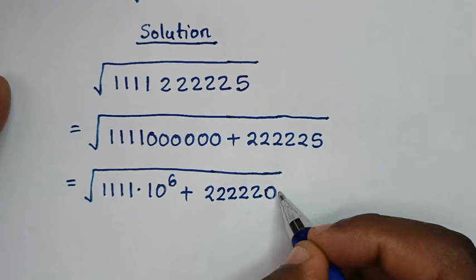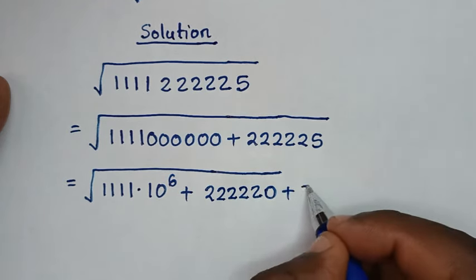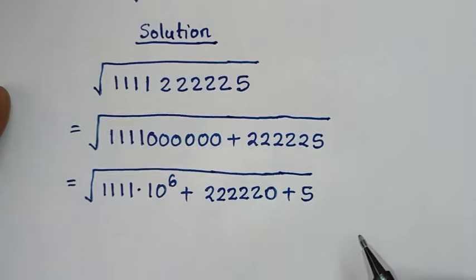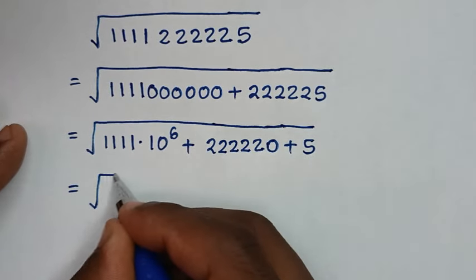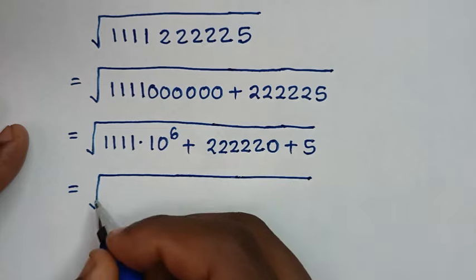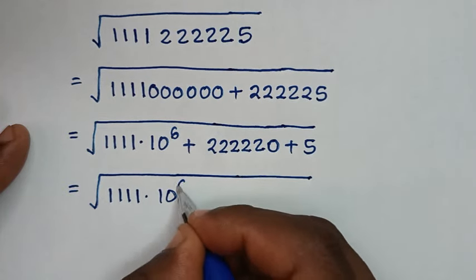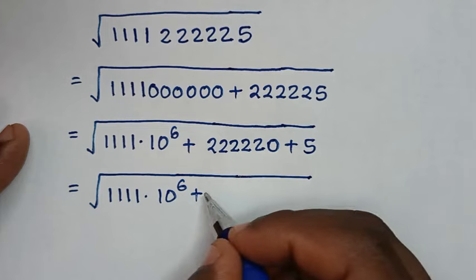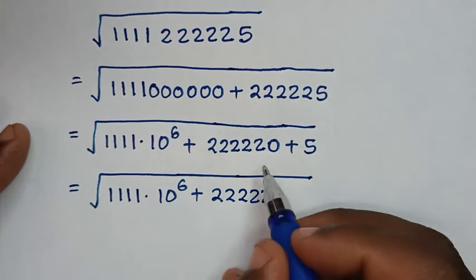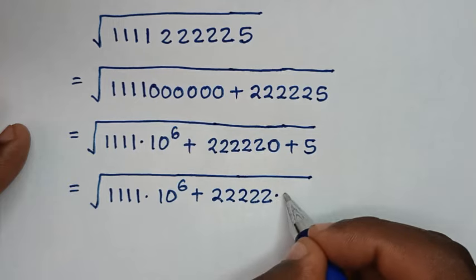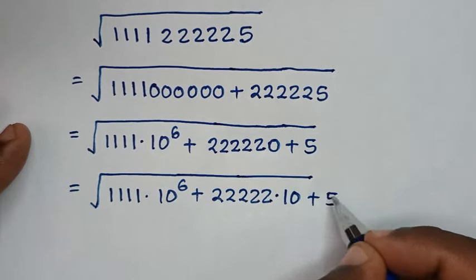Or, we can put 0 — 5 twos then 0 — plus this 5. Then in the next step, it will be equal to square root of 1, 1, 1, 1, 1 times 10 power of 6, then plus 2, 2, 2, 2, 2. For this 0, it's same as times 10. Then plus this 5.